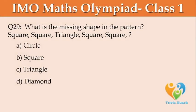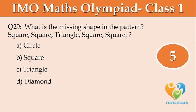What is the missing shape in the pattern? Square, Square, Triangle, Square, Square, ___. Option A: Circle, Option B: Square, Option C: Triangle, Option D: Diamond.